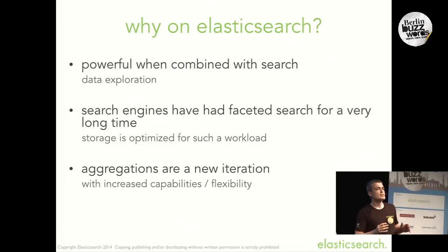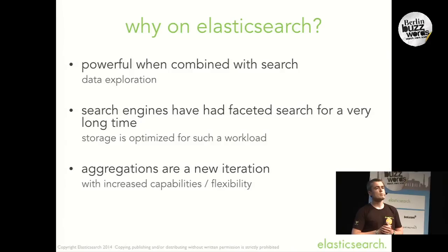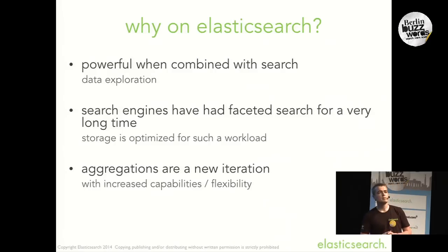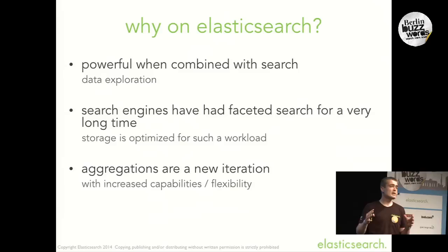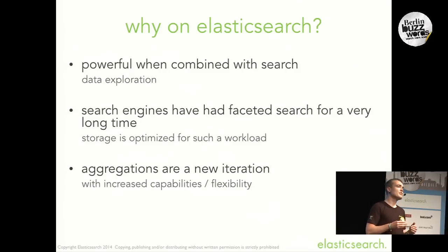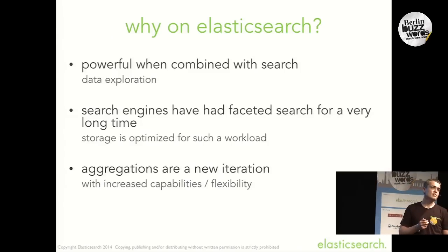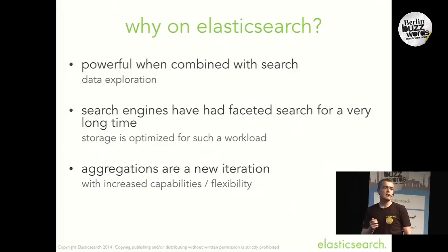Now I'm going to explain why it makes sense to implement aggregations in Elasticsearch. It's very powerful when combined with search because everything is computed dynamically on the fly — if your user refines a query, you can recompute all counts dynamically. Another reason is on the implementation side: search engines have had faceted search for a very long time, and as a result Elasticsearch has storage that is highly optimized for such use cases.